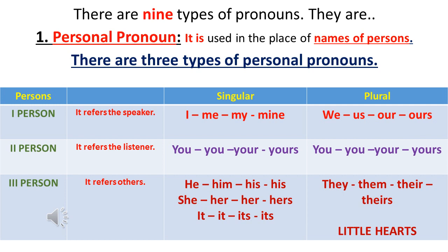In the previous video we discussed what is a pronoun. Now let's have a look at the types of pronouns. There are nine types of pronouns in English. The first one is the personal pronoun — a pronoun that can be used in the place of names of persons. Personal pronouns can be classified into three persons: first person, second person, and third person, each with singular and plural forms.